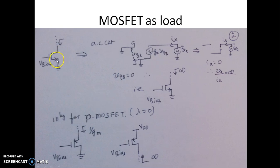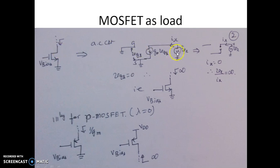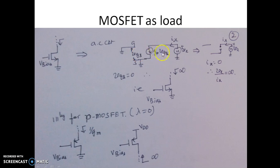Now we look at the same MOSFET from the drain side. The source is grounded and the gate is provided with some bias voltage. Here also we assume lambda = 0. The equivalent circuit shows the gate is grounded. Since we are looking from the drain, a dummy source Vx is connected to the drain. Since gate and source are both grounded, Vgs = 0, so the current source gm·Vgs = 0, which is represented by an open circuit. Therefore Ix = 0, and Vx/Ix is infinity.